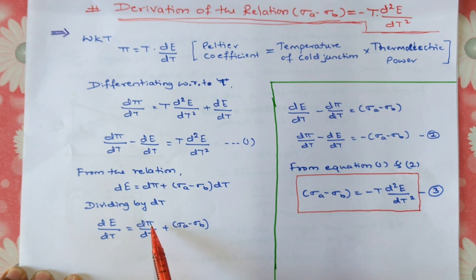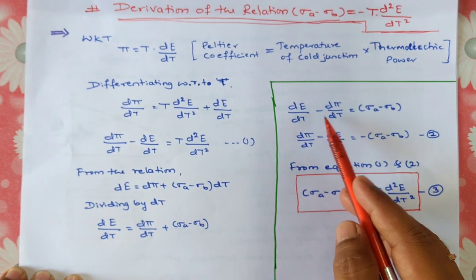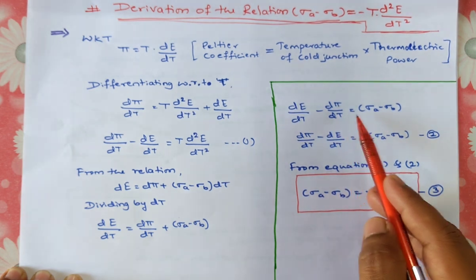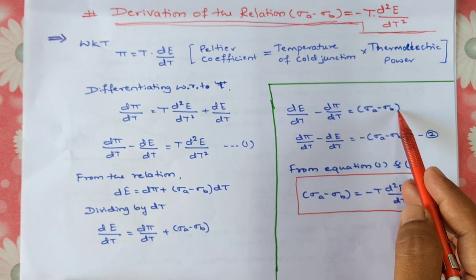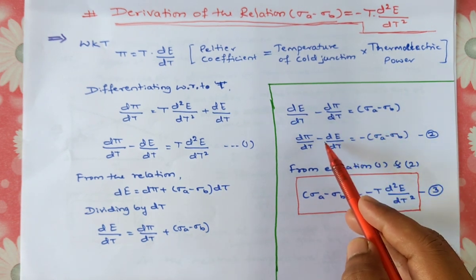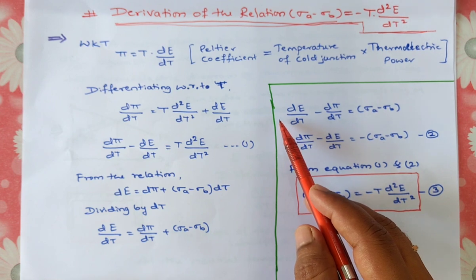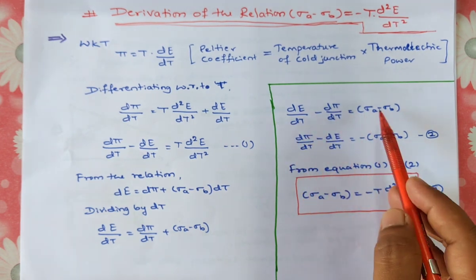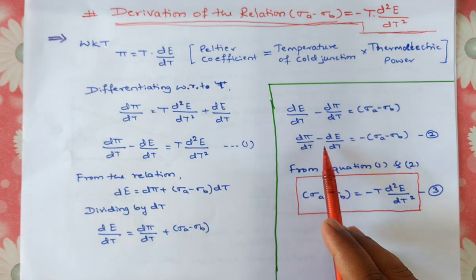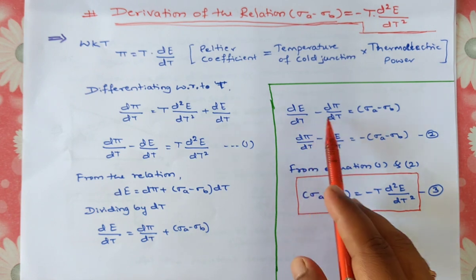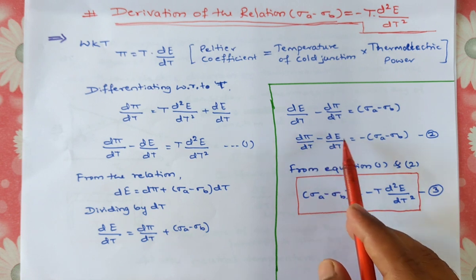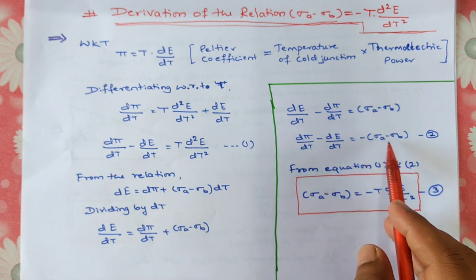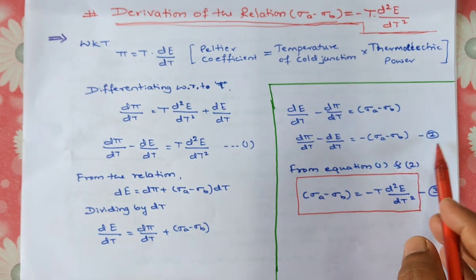Then taking d pi divided by dt to the left hand side, it becomes d e divided by dt minus d pi divided by dt is equal to sigma a minus sigma b. This is equation number 2.